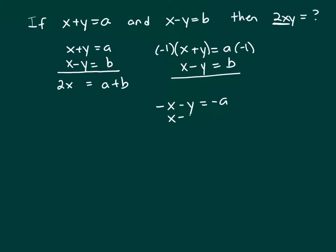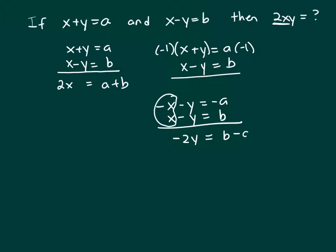Then write down the second equation. You see now when you add your equations together, your x's cancel out. Now add the negative y minus y — that's a negative 2y — equals, add the right-hand side together, and that gives you b minus a.